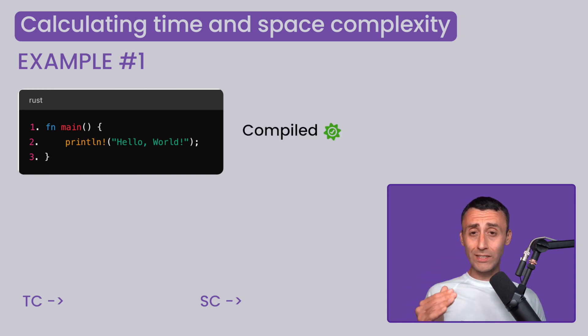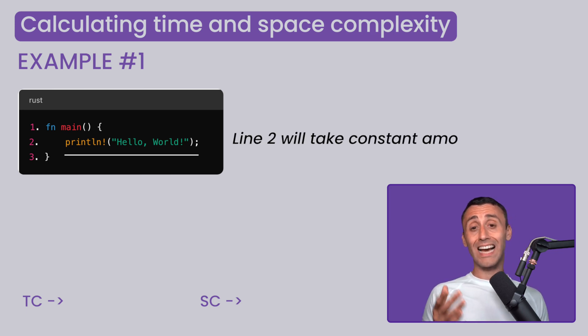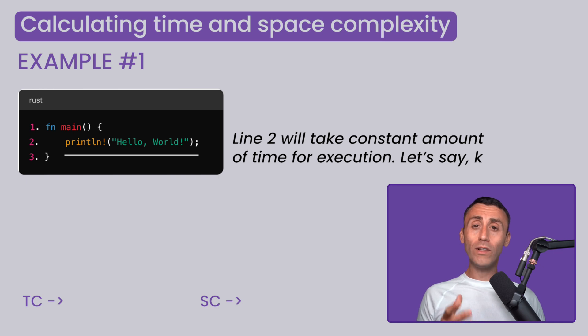As you know, once compiled, the code is executed line by line. There is only one line of code here, the print statement. And as you can tell, it will take a constant amount of time to execute. Let's say K. Now, what if you increase the input size here? But wait, there is no input size. So the input size is non-existent here. Hence, the execution of this program will always take a constant time.